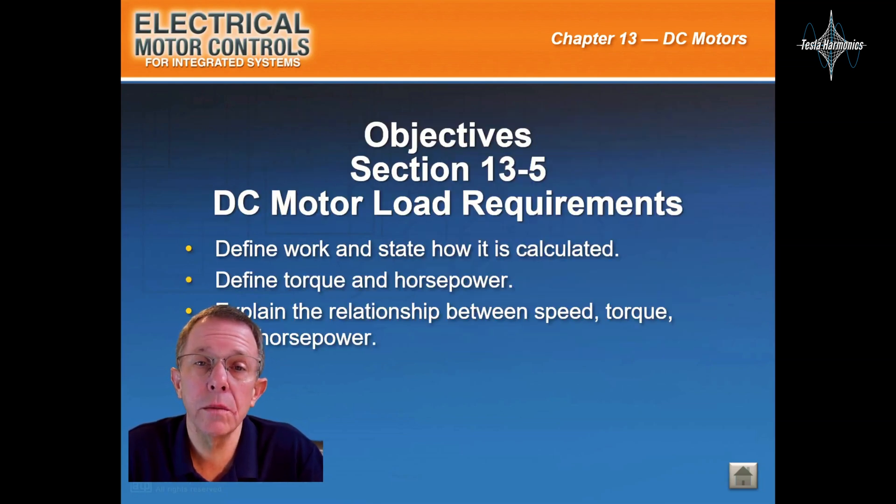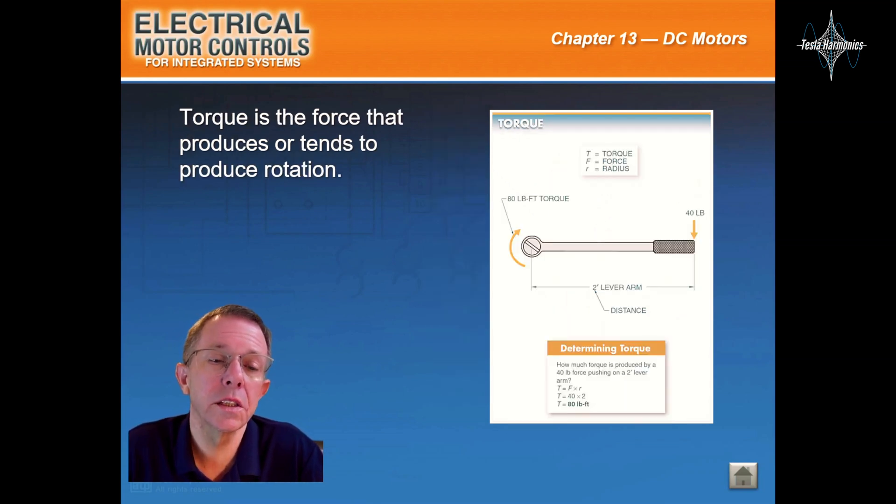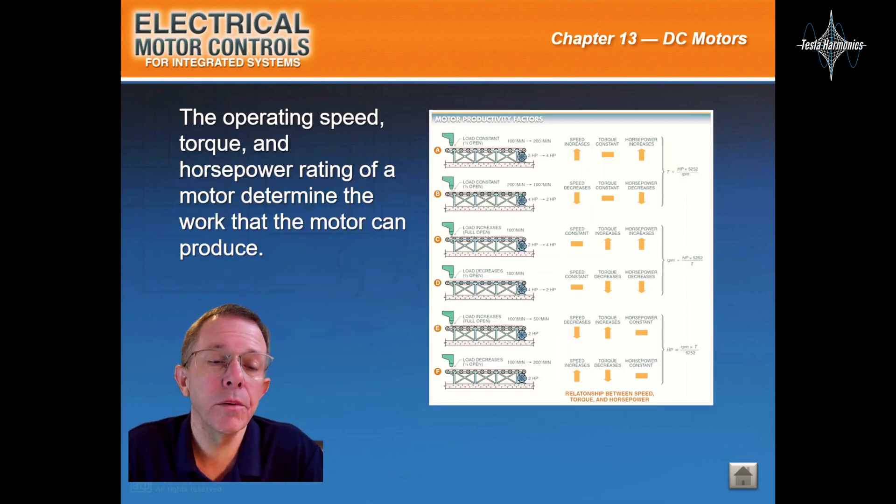DC motor load requirements: Work equals force times distance. Torque is the force that produces or tends to produce rotation. Motor power is rated in horsepower and watts. The operating speed, torque, and horsepower rating of a motor determine the work that the motor can produce.